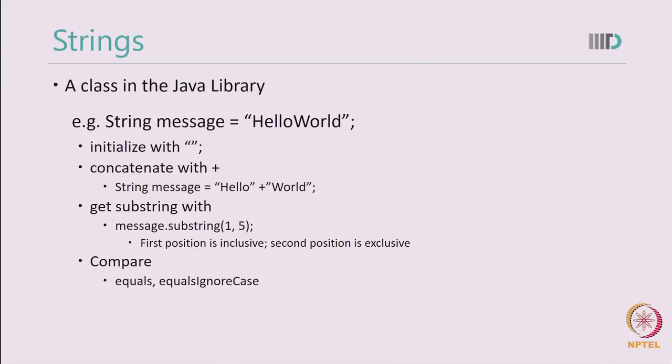In the given example of 1 to 5, I will actually have e, l, l and o as a result of the message dot substring call.